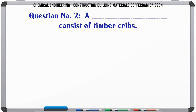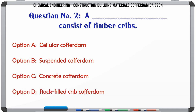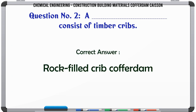Which type of cofferdam consists of timber cribs? A. Cellular cofferdam. B. Suspended cofferdam. C. Concrete cofferdam. D. Rock filled crib cofferdam. The correct answer is: Rock filled crib cofferdam.